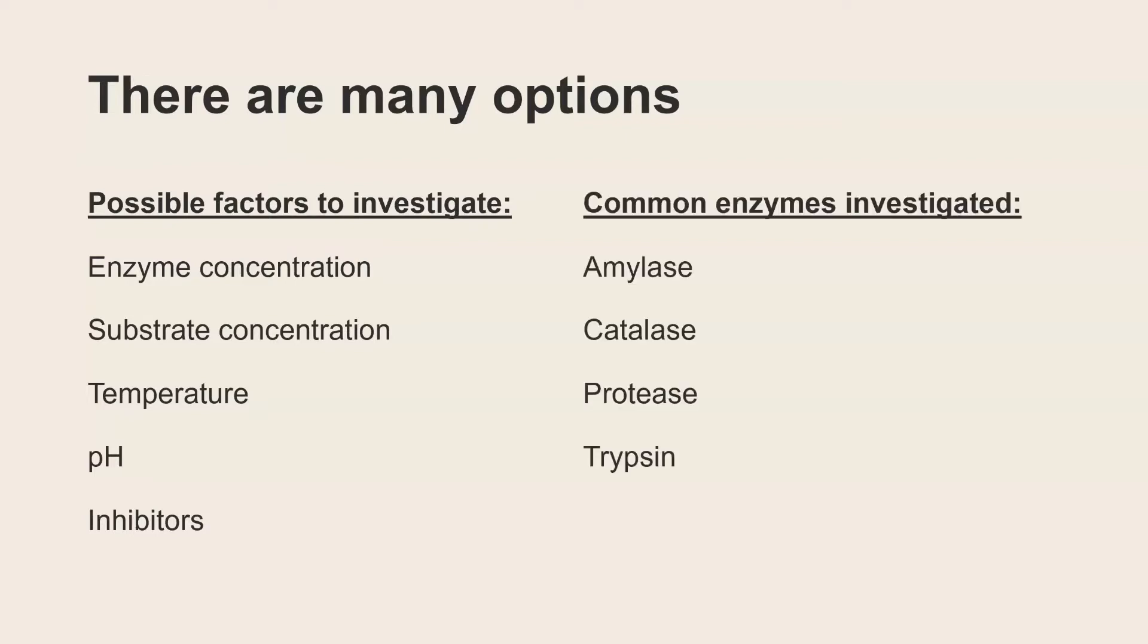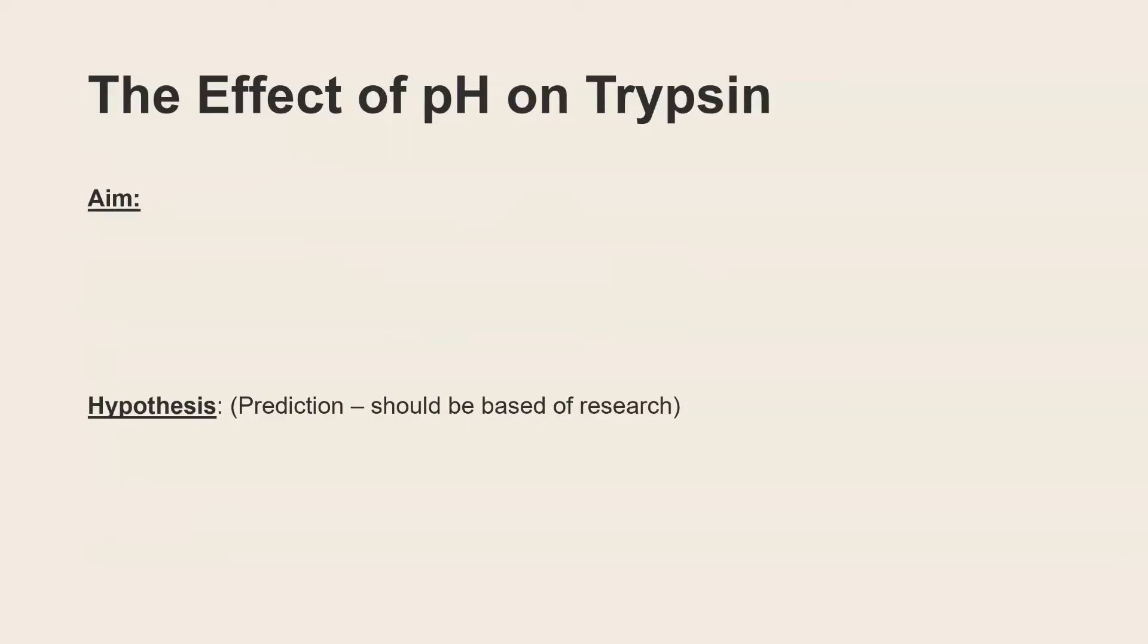Now the most common enzymes that are used in investigations are these four here: amylase, catalase, protease and trypsin. But again that doesn't guarantee that if it came up in the exam it would be one of those enzymes. So although in this video I'm going to help you to plan one particular practical, bear in mind that you'll need to use these skills transferably, potentially in the exam. So the practical that I'm going to be doing is the one that I do with my students investigating the effect of pH on the enzyme trypsin.